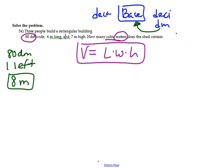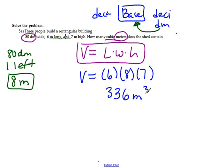At this point, my units are the same. I can plug in. So length is 6. My width is 8 now. My height is 7. 6 times 8 is 48. Times the 7 gives me 336 meters cubed because my units are all the same. The key piece is converting.